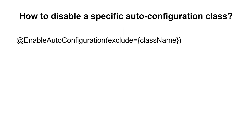The next question was: how do you disable a specific autoconfiguration class? You can use @EnableAutoConfiguration along with the exclude property to disable a specific class from autoconfiguration. You specify the exclude property with the class name, and that class will be excluded from your autoconfiguration.